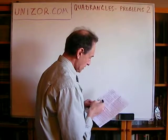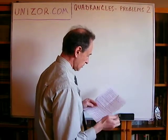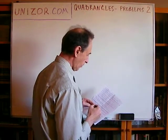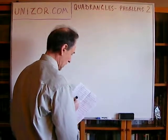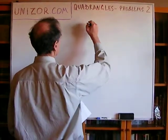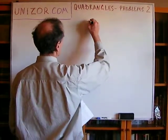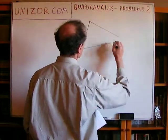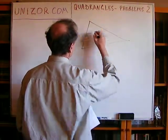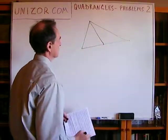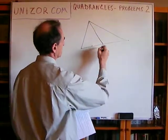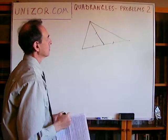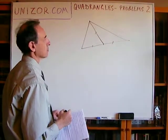Proof of converse theorem: if the median in a triangle is equal to half the side it falls on, then the angle where it starts is a right angle. So let's consider we have a triangle where the median equals half the side — making three equal segments.